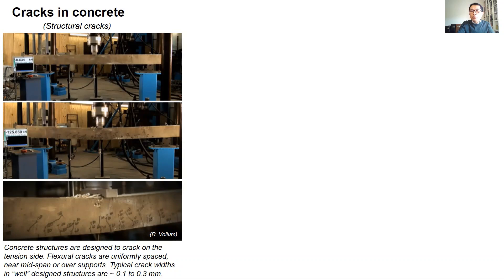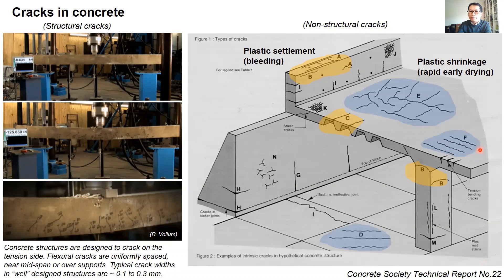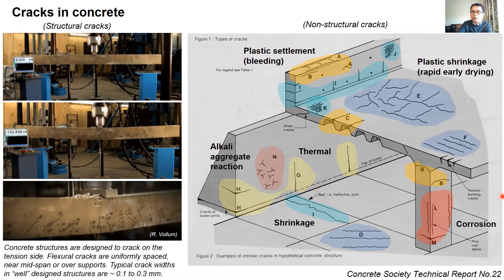What I'm more interested in are the non-structural cracks, which are caused by volume changes that occur throughout the life of the structure. This excellent diagram from the Concrete Society Technical Report 2 shows the different types of non-structural cracks, how they look and where they are likely to be found. For example, concrete can crack at early ages due to excessive bleeding and settlement over steel reinforcement, or due to rapid early age drying and plastic shrinkage, or due to temperature rise from heat of hydration and subsequent contraction on cooling. Other factors include drying shrinkage and degradation mechanisms such as reinforcement corrosion, frost, sulphate attack, and alkaline aggregate reaction.